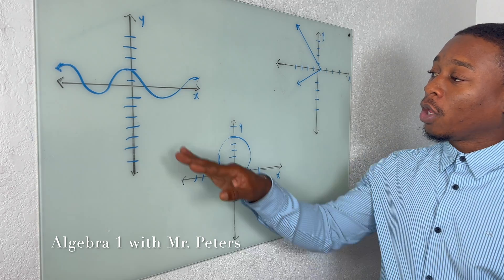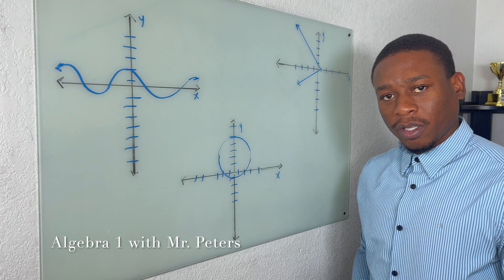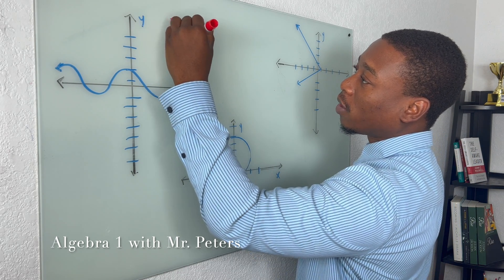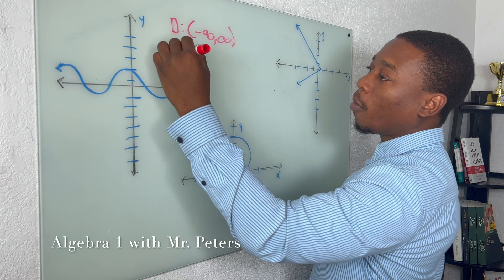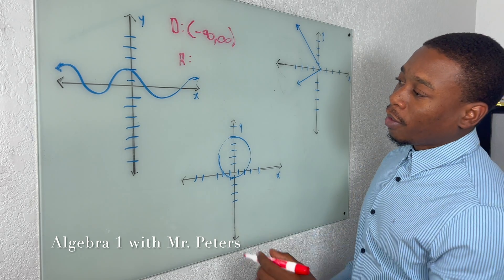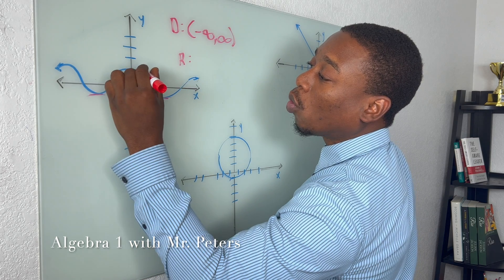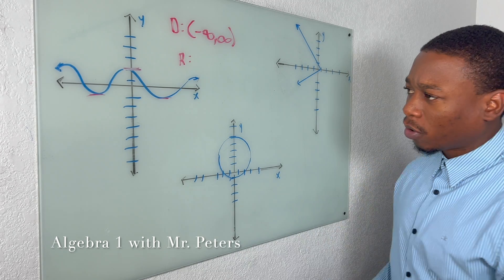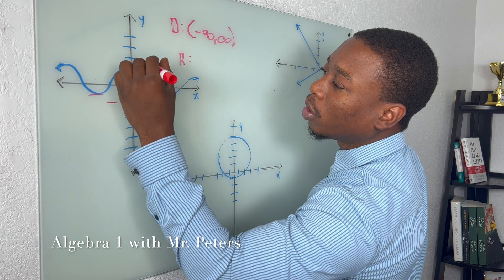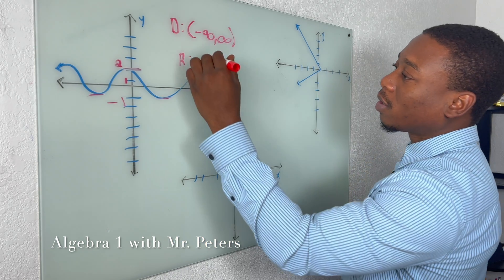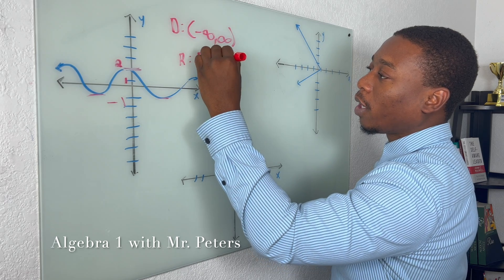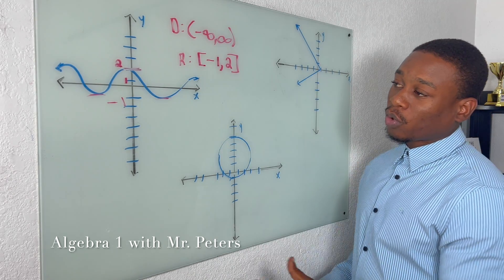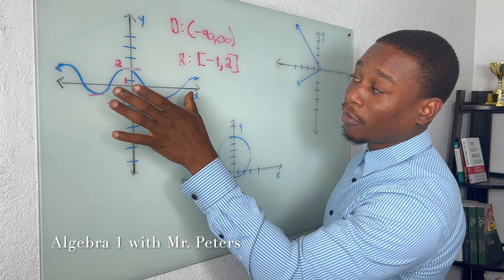Moving on to the second set of problems. In our first graph, we have endpoints on both ends of this line. So we know the domain is going to be negative infinity to positive infinity. But when we come down to the range, we notice it's not going to get lower than these two points or higher than this point. So it's not going to get lower than negative one or higher than positive two. Written in interval notation, we put bracket negative one, comma, two, bracket. Pay attention to the lowest and highest parts of the graph in a problem like this.